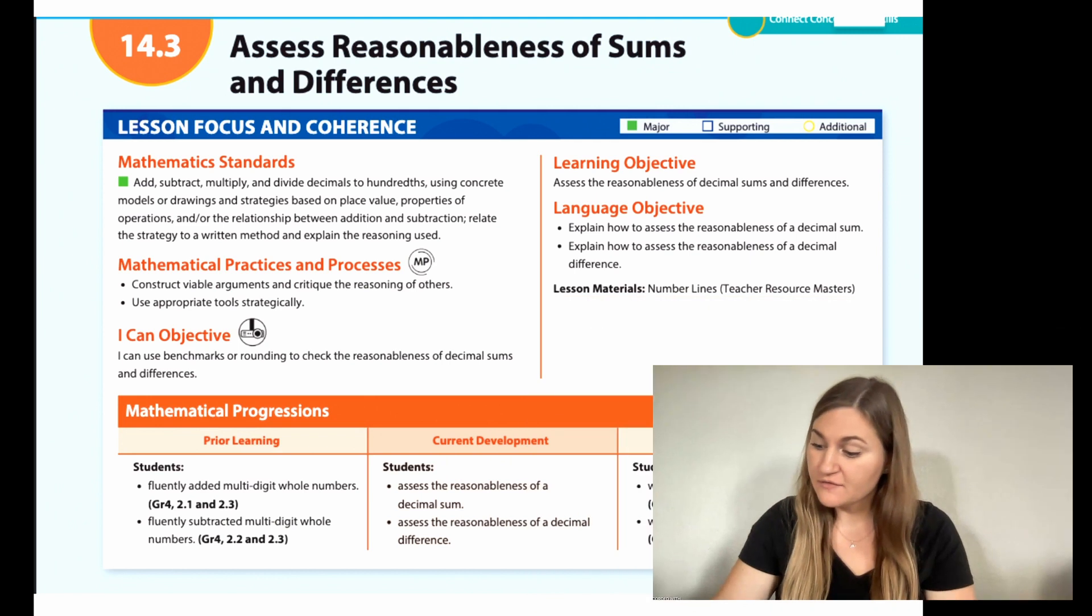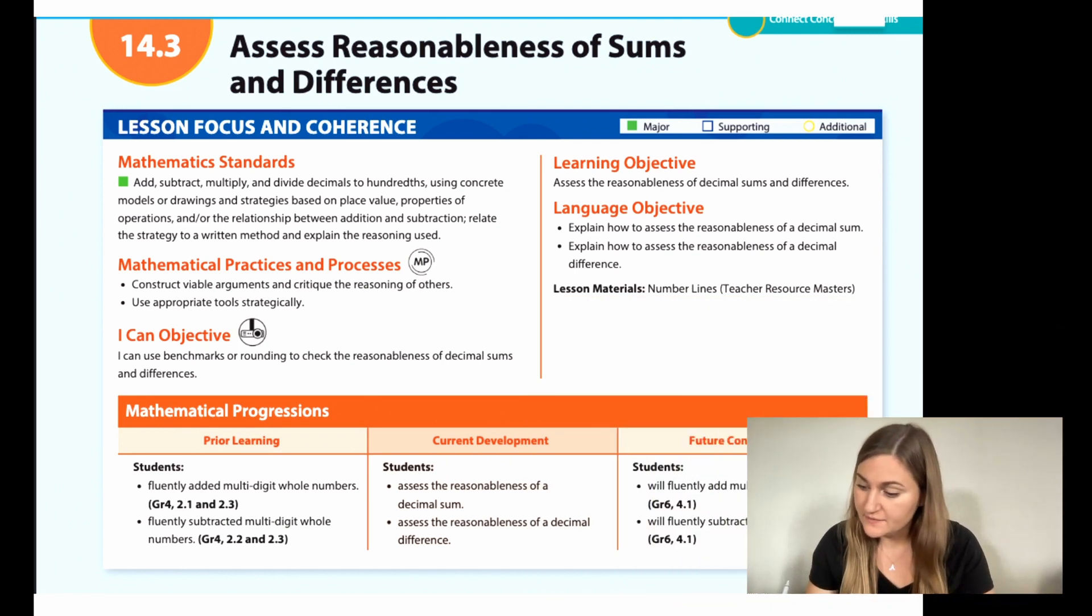Hi, I'm Natalie Rhodes and this is Into Maths 5th grade, Module 14, Lesson 3. I'm going to start off by going over the I Can Objective. It says I can use benchmarks or rounding to check the reasonableness of decimal sums and differences. The learning objective is to assess the reasonableness of decimal sums and differences.